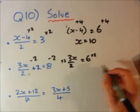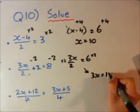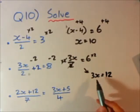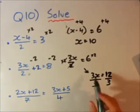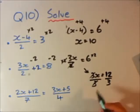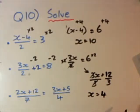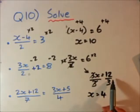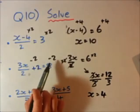So 3x over 2 plus 2 minus 2 will just leave me with 3x over 2 equals 8 minus 2 is 6. Now I'm two steps away from finishing. I'm going to times the left hand side and the right hand side by 2 to get rid of this number below here. I'll leave that with just 3x equals 12.